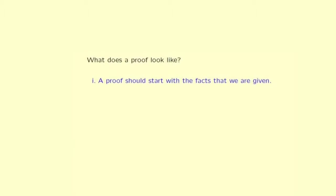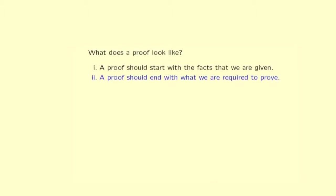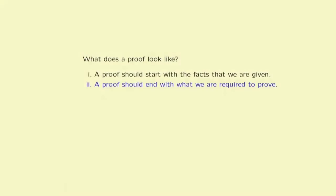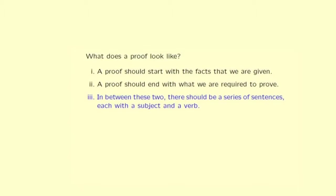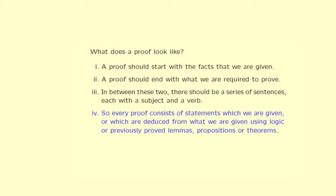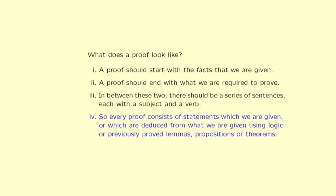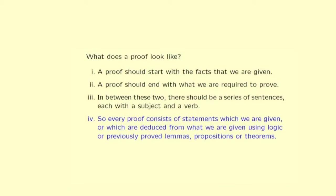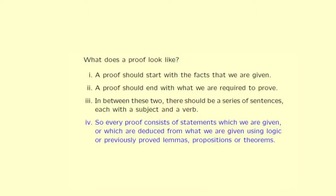So let us recall what a proof looks like from Video 4A. A proof should start with the facts that we are given. A proof should end with what we are required to prove. In between these two, there should be a series of sentences, each with a subject and a verb. So every proof consists of statements which we are given or which are deduced from what we are given using logic or previously proved lemmas, propositions, or theorems.